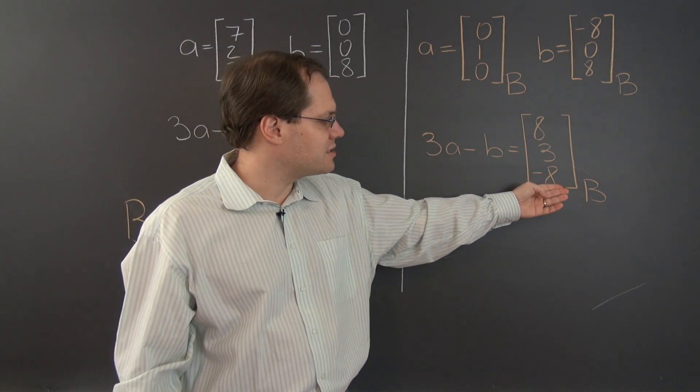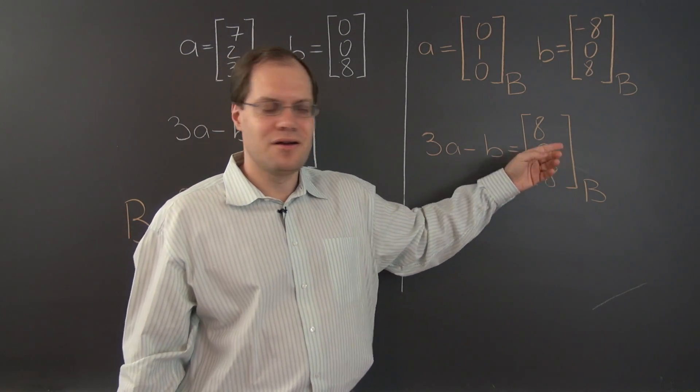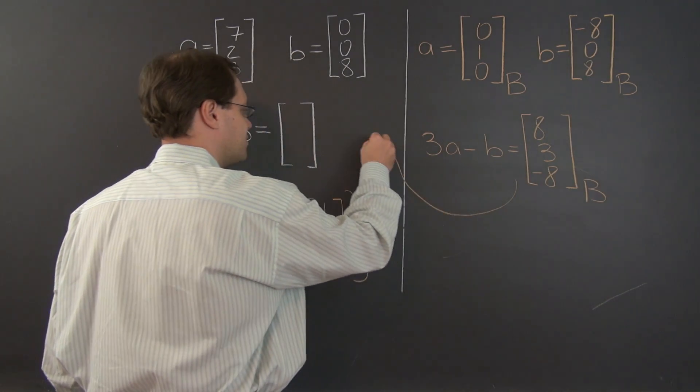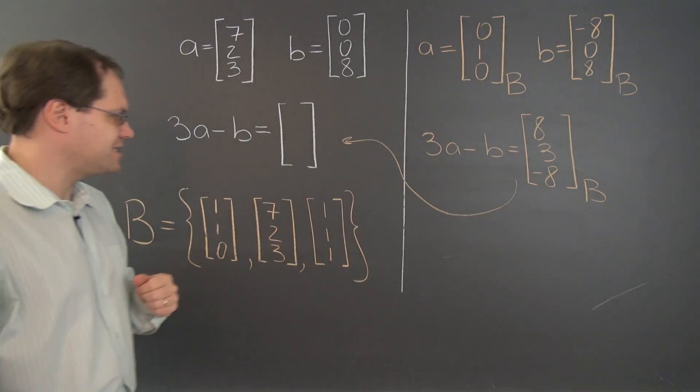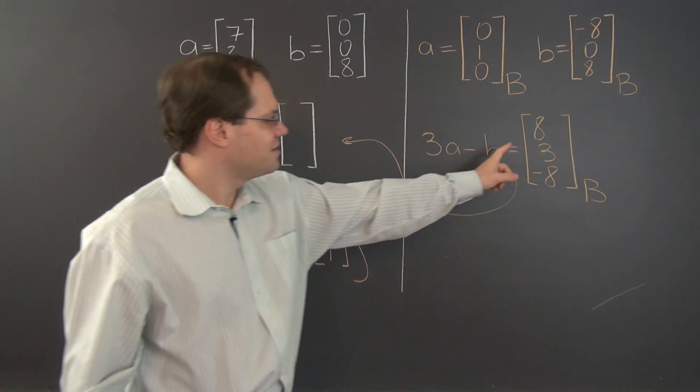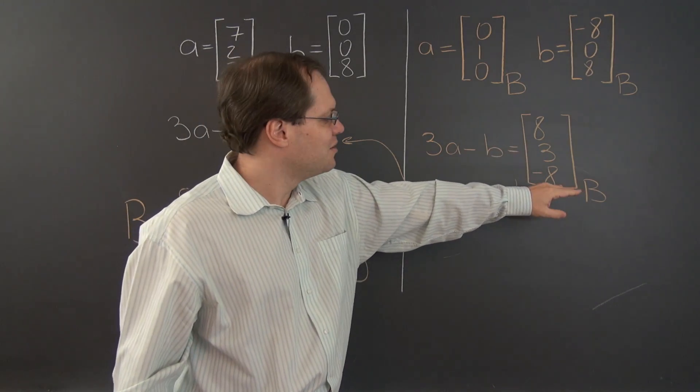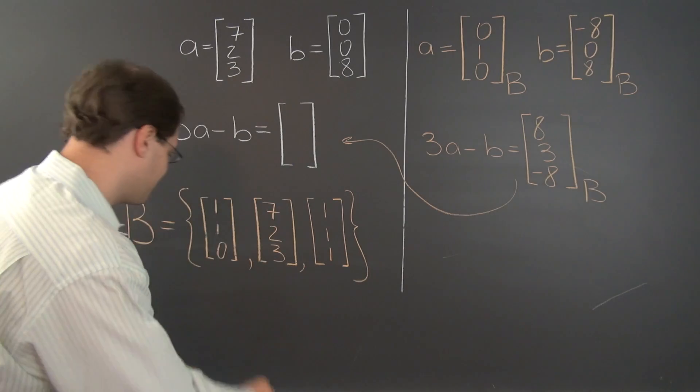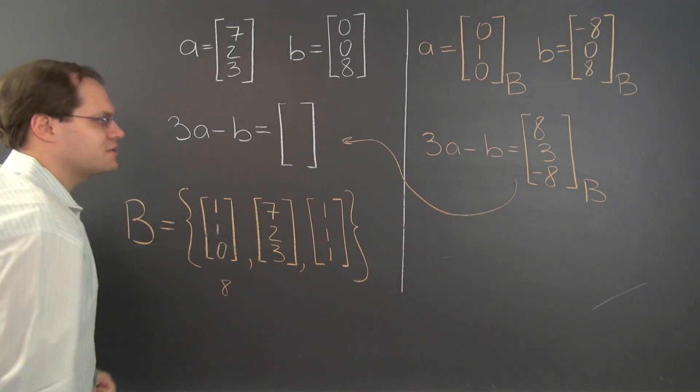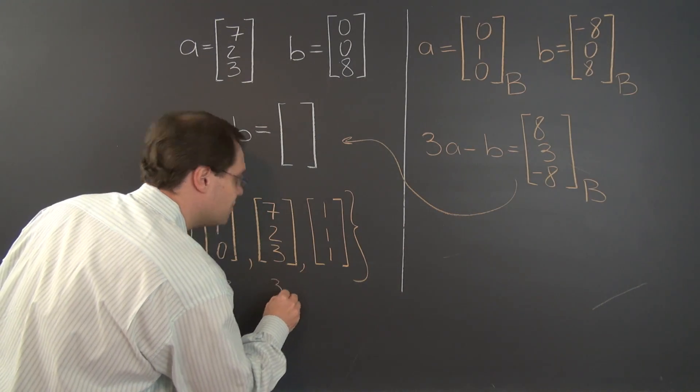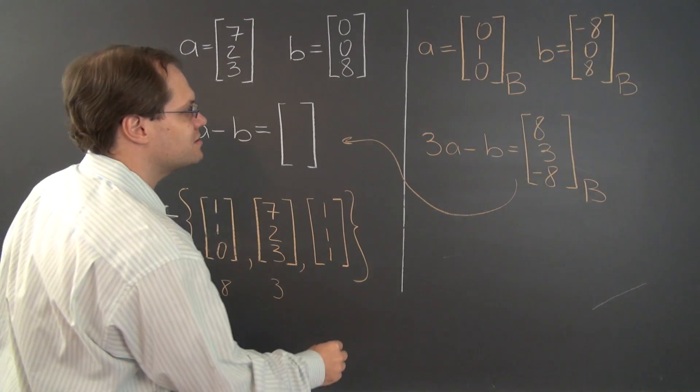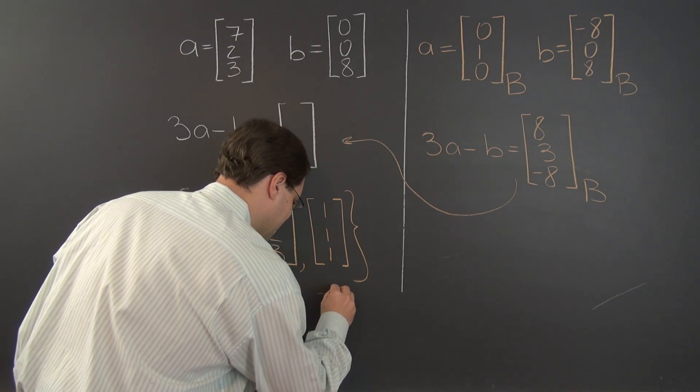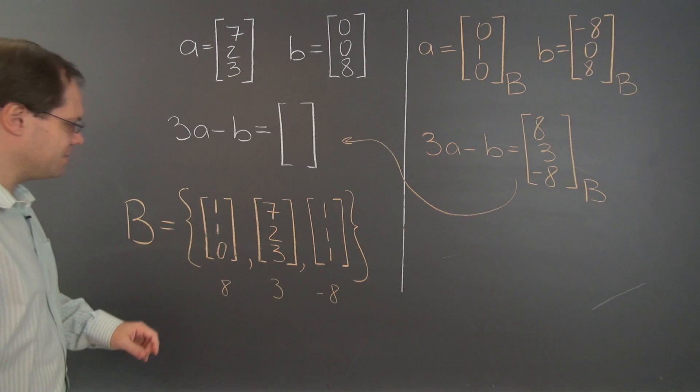And now we have to translate the components of the answer back to the real answer as we always do as the last step. So we have to take, this won't be too simple, we'll have to take 8 of the first element of the basis, 3 of the second element of the basis, and finally minus 8 of the last element of the basis.